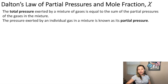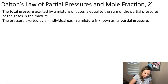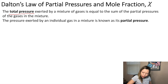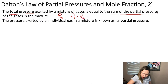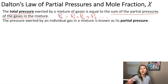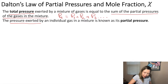Let's talk about Dalton's law of partial pressures and mole fractions. The total pressure exerted by a mixture of gases is equal to the sum of the partial pressures of the gases in the mixture. So if P_T is the total pressure, it equals the sum of the partial pressures of each gas. P1, P2, and P3 are the partial pressures — that is, the pressure exerted by an individual gas in a mixture.